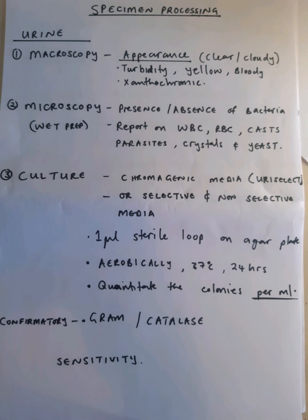For microscopy, we do a wet prep using iodine — though some prefer not to use iodine — just a drop of urine on a slide and look under a microscope. We look for the presence or absence of bacteria, white blood cells, red blood cells, casts, parasites, and yeasts. We have to report on everything that we see — present or absent.